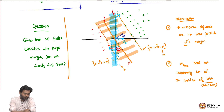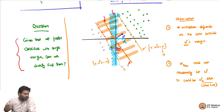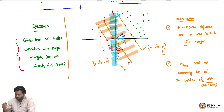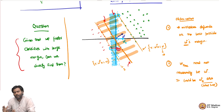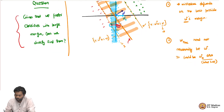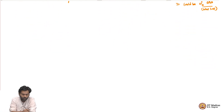But how can we formalize this? Given that we prefer classifiers with large margin, can we directly find them? Our goal is to come up with a principled way to find a w which classifies our data points with as large a margin as possible. So let us start with that goal.